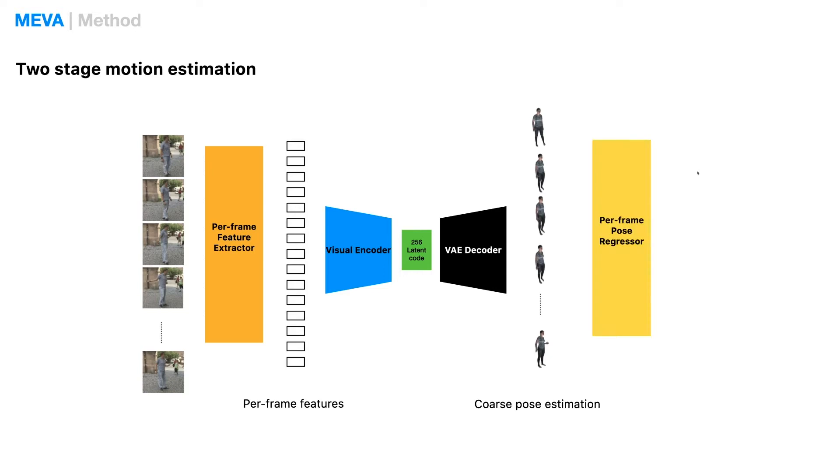Later, we train an additional regressor to iteratively refine the coarse estimation to add back the fine details. By using a pre-trained latent space, we constrain our estimation into a human motion subspace that only contains natural human poses.